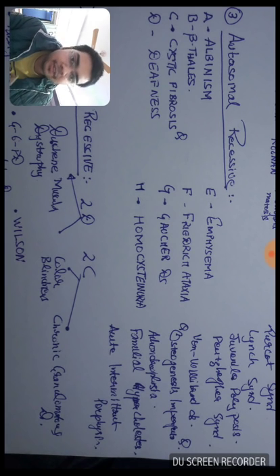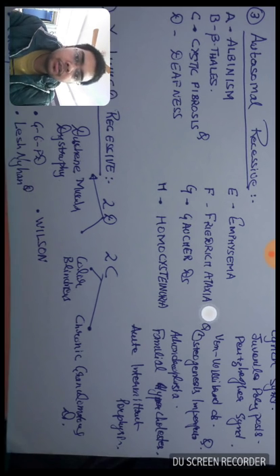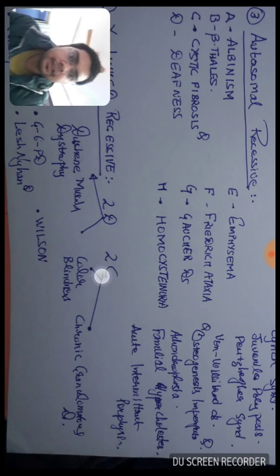Coming to autosomal recessive, a simple one: ABCDEFGH. A for albinism, B for beta thalassemia, C for cystic fibrosis, D for deafness (congenital), E for emphysema, F for Friedreich's ataxia, G for Gaucher disease, H for homocystinuria. Autosomal recessive has been done.